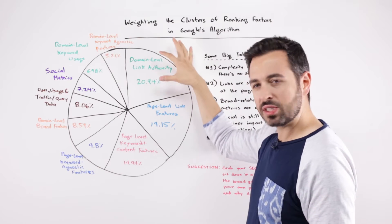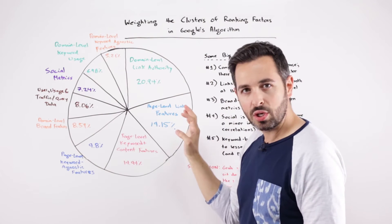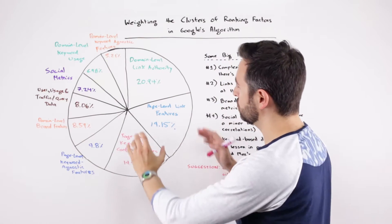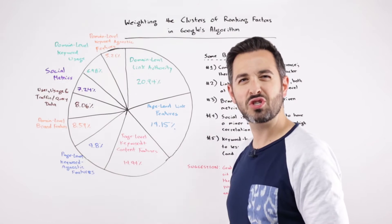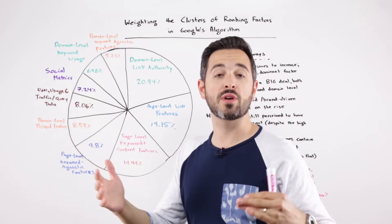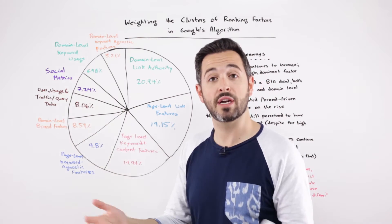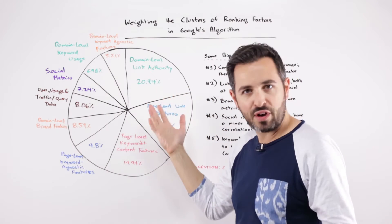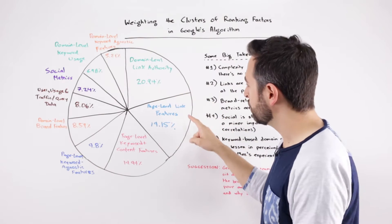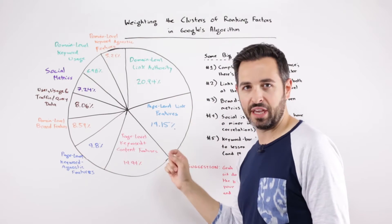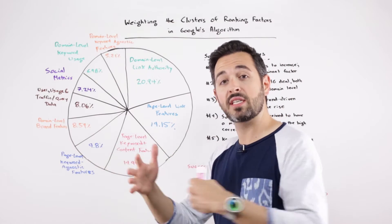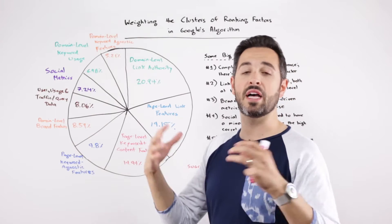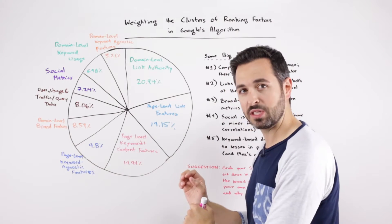Interestingly, the largest portion given credit by the SEOs who answered was domain-level link authority. This is the classic thing we think of in the Moz scoring system as domain authority, DA. They said 20.94%, which is fairly substantive. It was the largest one. Just underneath that: page-level link features — meaning external links, how many, how high quality, where they're coming from — those kinds of things for ranking a specific page.